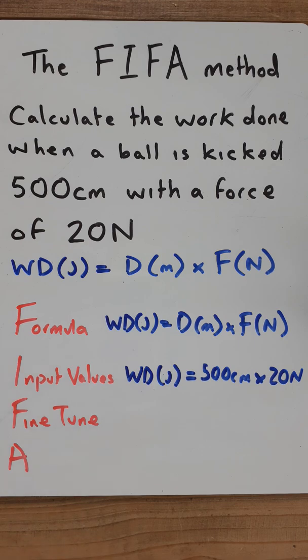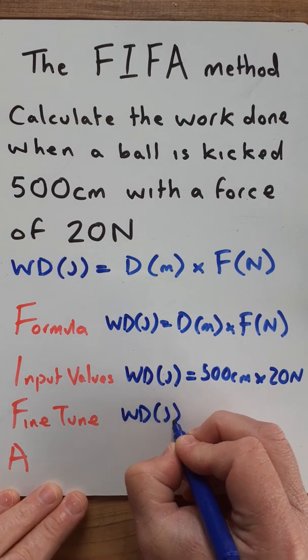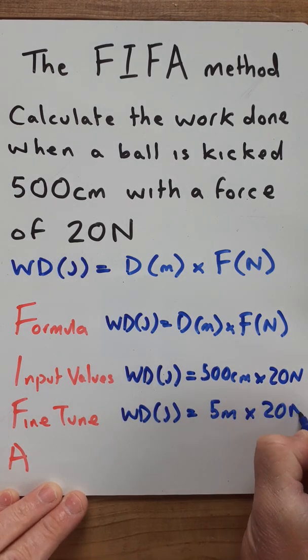So I need to fine tune it and there are 100 centimeters in one meter so that means 500 centimeters is actually 5 meters. So work done in joules is actually equal to 5 meters times 20 newtons.